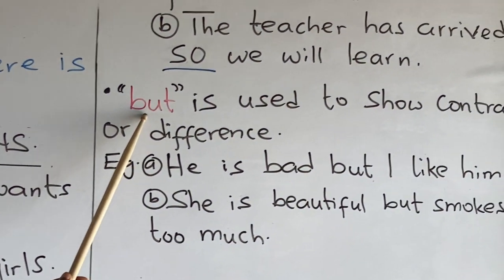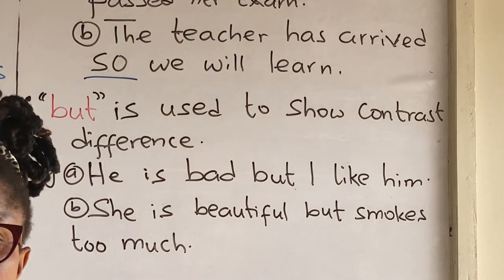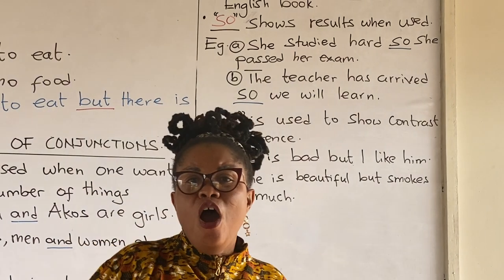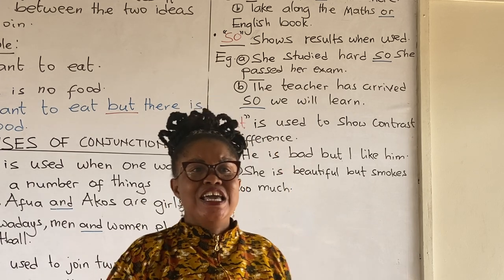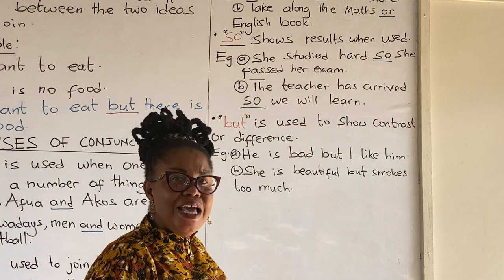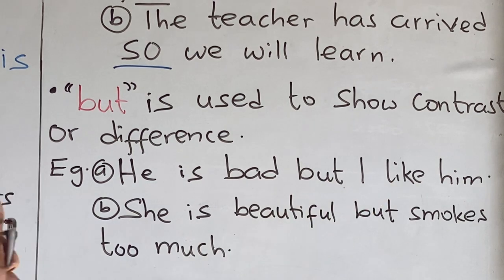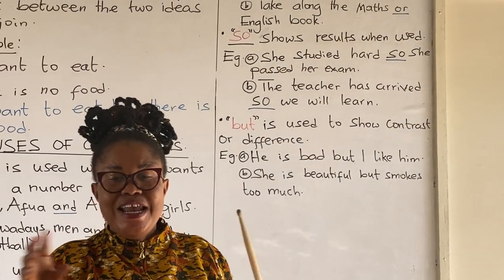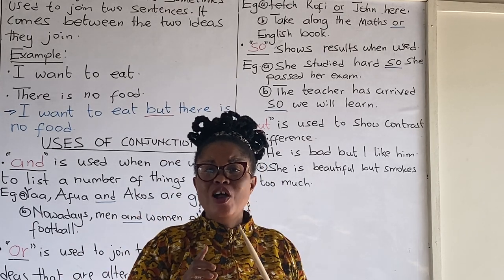Let's look at 'but' — how 'but' is used to join sentences. 'But' is used to show contrast or difference. So as soon as we use 'but', it's either this or that, showing difference between two things. Example: He is bad, but I like him. 'But' has been used here to show the difference.